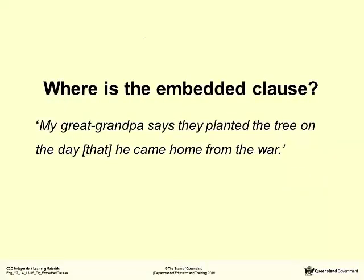What about this example? My great-grandpa says they planted the tree on the day he came home from the war. Notice here that you can remove the relative pronoun 'that' and it would still make sense: 'My great-grandpa says they planted the tree on the day he came home from the war.' Authors sometimes omit words that are not essential to making meaning. This omission helps keep the text fluent and precise. Remember, in our embedded clause rules, the relative pronoun can be omitted and the sentence will still make sense.